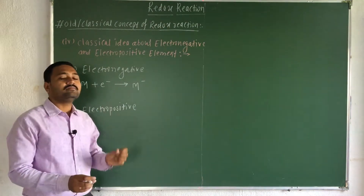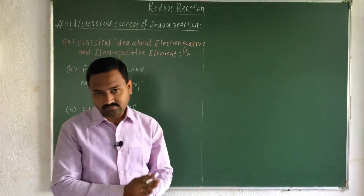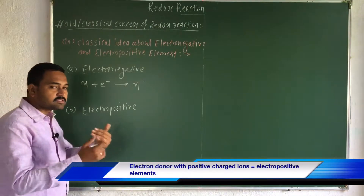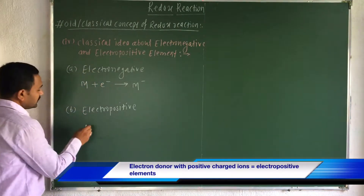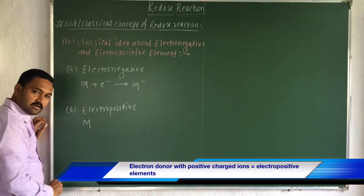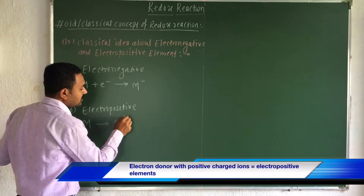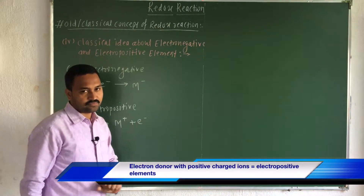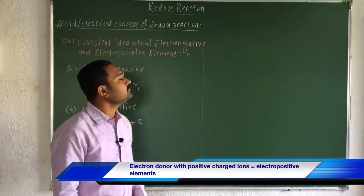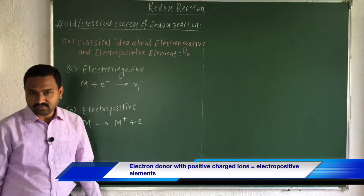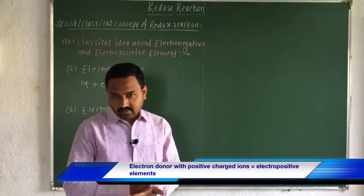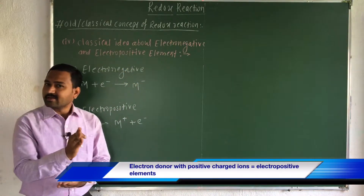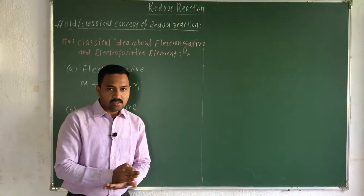Simply, this particular atom has the tendency to accept an electron. Now, what about the electropositive element? Whenever any atom loses its electron and converts into an M⁺ ion, that particular element is known as an electropositive element. Remember, in the periodic table there are several elements which show electropositive and electronegative nature.